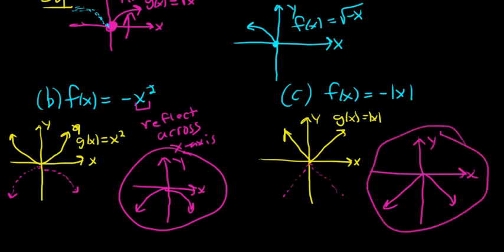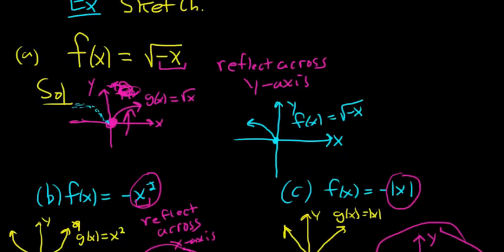So if you have a negative in front of the actual function values — in front of the y-values — you reflect across the x-axis. Whereas if you have a negative in front of the x-value, you reflect across the y-axis. I hope that made sense.